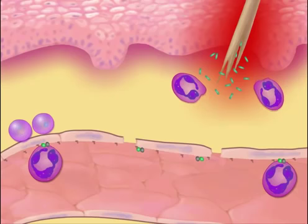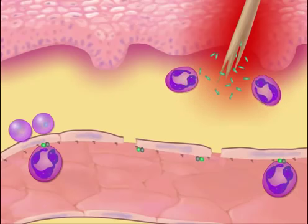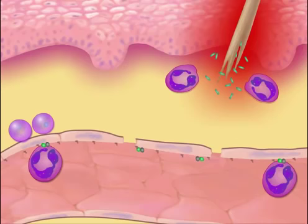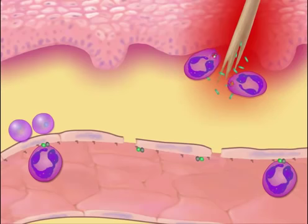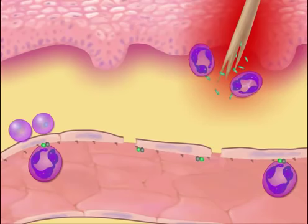The neutrophils, followed by other types of phagocytes, are attracted to the damaged site by chemotactic substances released by bacteria and tissue breakdown products. They ingest and destroy invading bacteria.